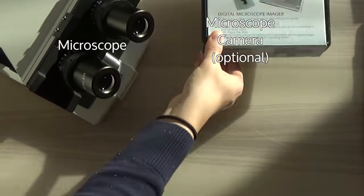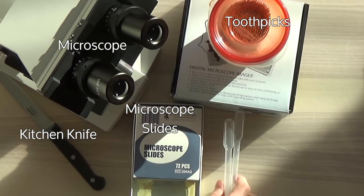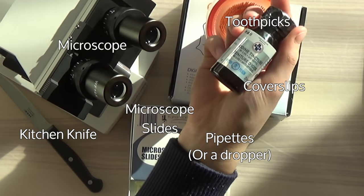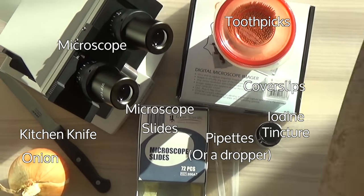A microscope, a microscope camera, microscope slides, a kitchen knife, toothpicks, pipettes, cover slips, iodine tincture, an onion, and a cutting board.